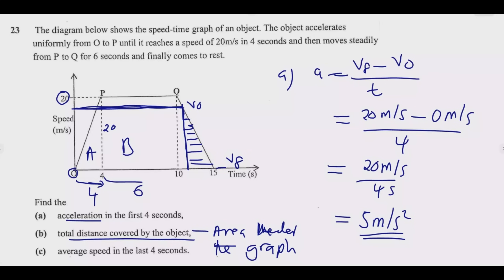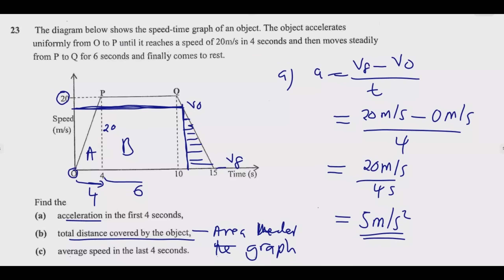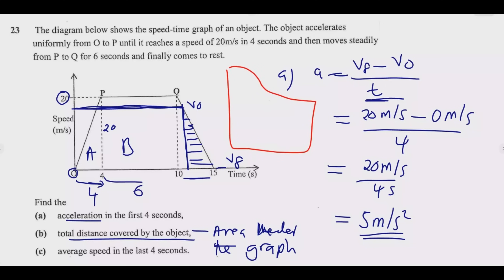There's a temptation to say the area under the full deceleration region is 50, then divide by 5 to get 10 meters per second — that's not correct. Others might take that area of 50 and divide by 4 to get 12.5 — again, that's not correct. To find the correct answer, we need to first find the deceleration in the last five seconds.